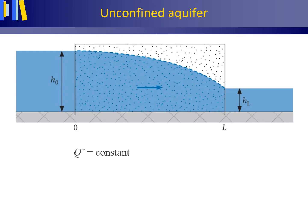Now we can apply Darcy's law. Q' equals minus K times the hydraulic head H times the hydraulic gradient dH/dx. We combine this with the continuity equation and obtain this equation.